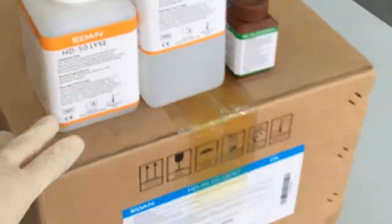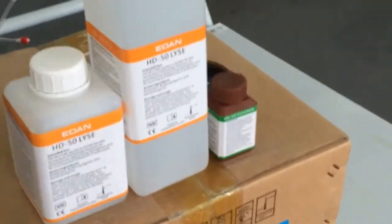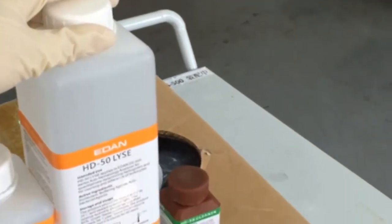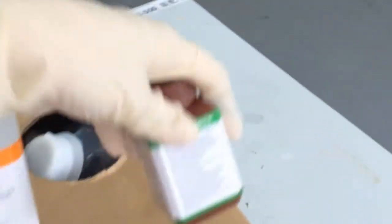We also have three reagents in our system. That is diluent, lyse, which has two versions - one is 500 milliliters, the other one is one liter - and last but not least is our cleanser.